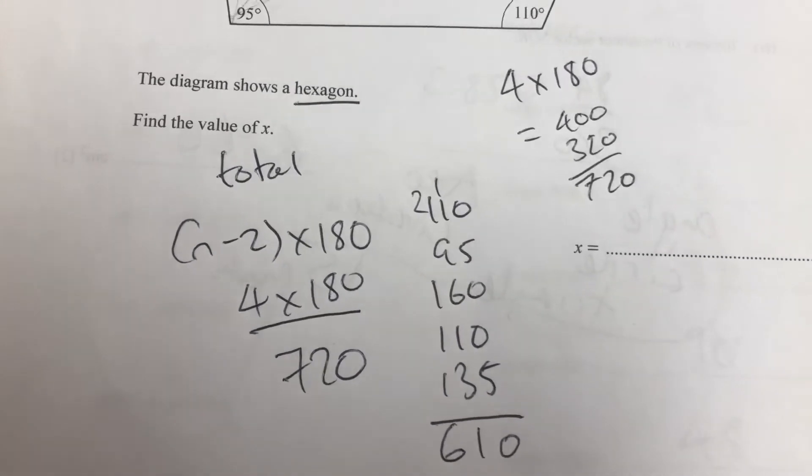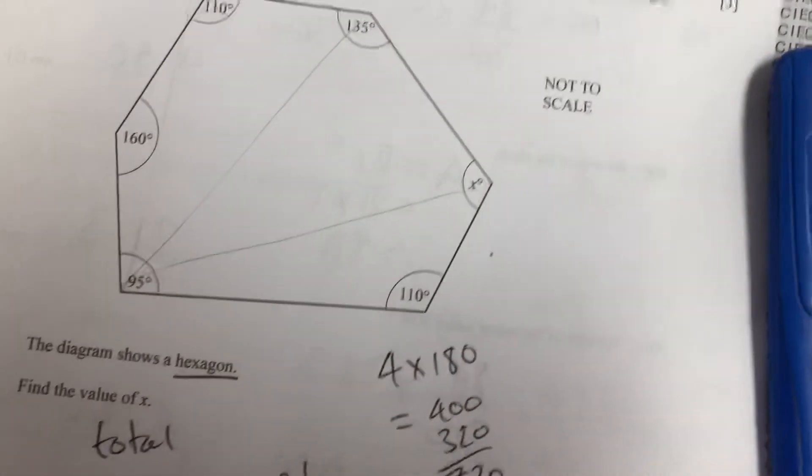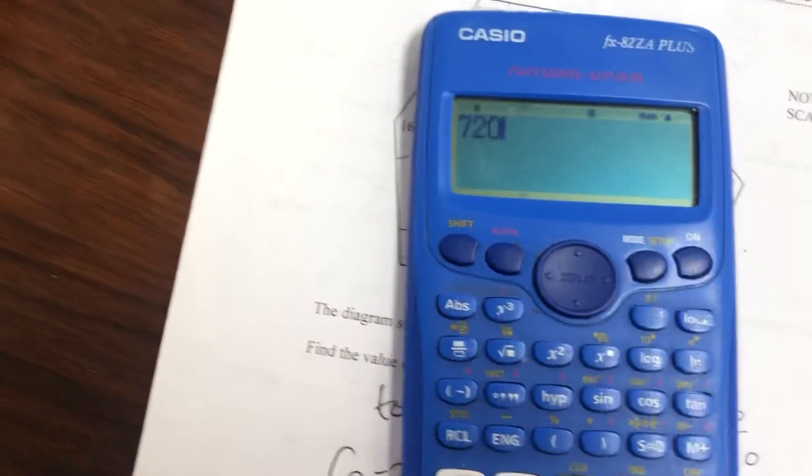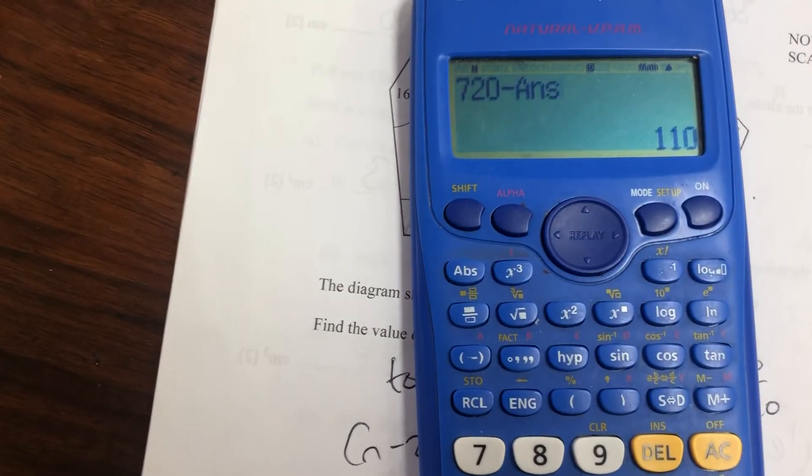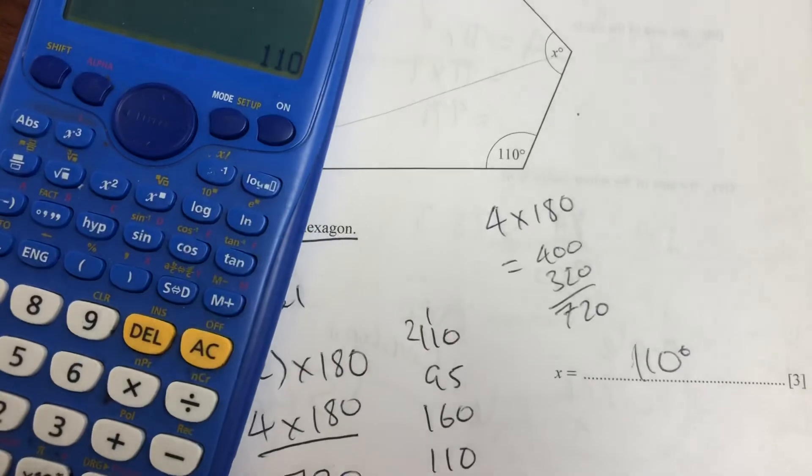Then we need to subtract that from 720. 720 minus, again, the use of the answer button, 110. There we go, X is 110 degrees.